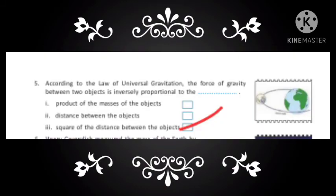According to the law of universal gravitation, the force of gravity between two objects is inversely proportional to the square of the distance between the objects. I repeat, it is square of the distance between them, not only the distance between them, but rather square of the distance between them.